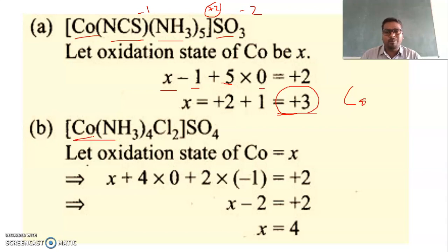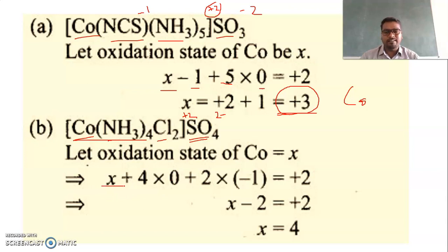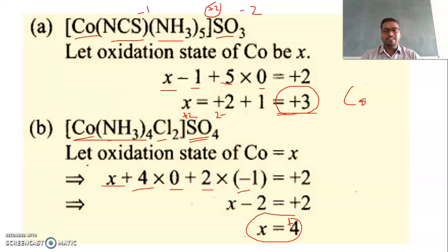Similarly, take another cobalt complex containing ammonia and chloride as ligands, with sulfate as the counter ion. Sulfate (SO₄²⁻) gives the coordination sphere a charge of +2. Taking cobalt's oxidation state as x: there are four ammonia ligands with charge zero and two chloride ligands each with charge −1. So x + 4×0 + 2×(−1) = +2. Solving: x − 2 = +2, giving x = +4. The oxidation state of cobalt is +4.